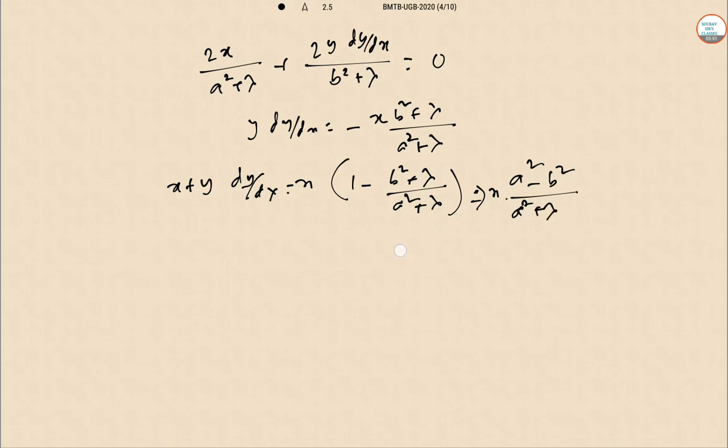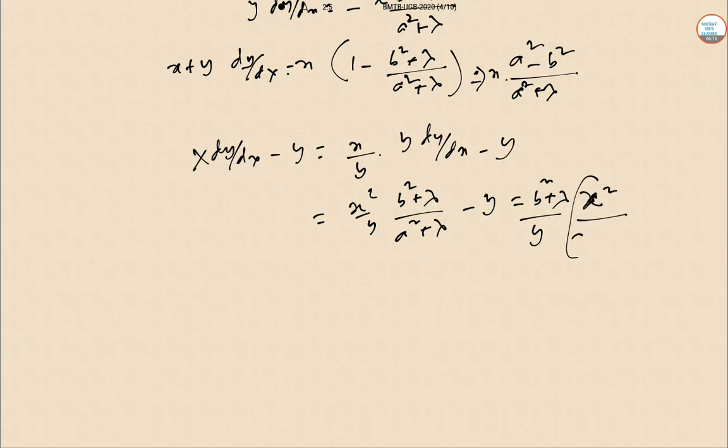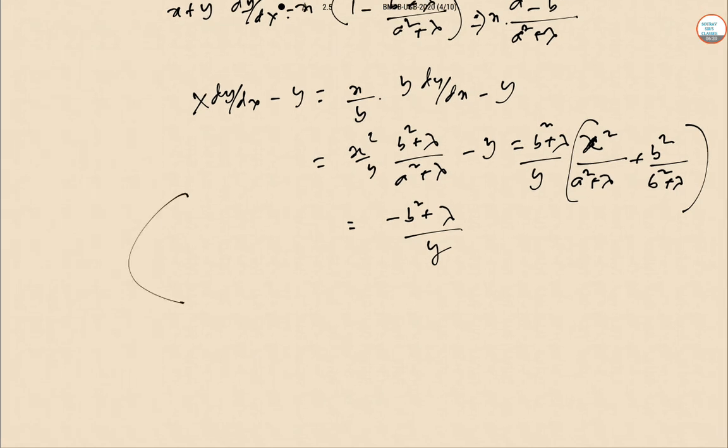And obviously in the other part, x(dy/dx) - y will be... this is y(dy/dx) - y, so this is minus x²/y times (b²+λ)/a. Putting the values here minus y, so (b²+λ)/y can be taken common, so x²/(a²+λ). So x²/(a²+λ) and y²/(b²+λ), that equals minus (b²+λ)/y. This has been done. So it follows that now this thing is following.